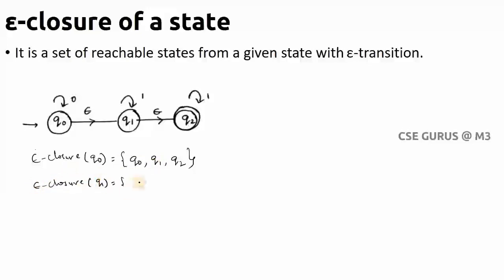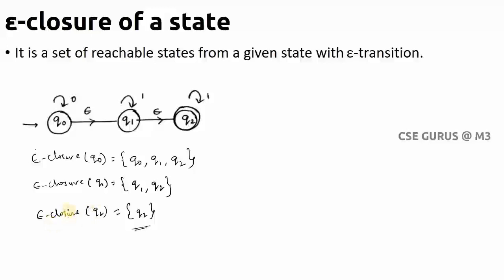For ε-closure(Q1): first include Q1 itself. From Q1, I can reach Q2 with epsilon, so Q2 is included. I cannot reach Q0 from Q1 with epsilon — the direction is Q0 → Q1, not reverse — so Q0 is excluded. Therefore ε-closure(Q1) = {Q1, Q2}. For ε-closure(Q2): include Q2 itself. There is no epsilon transition from Q2, so ε-closure(Q2) = {Q2} only.